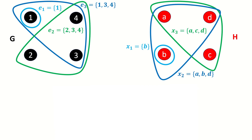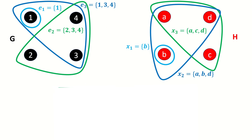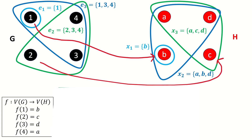Next, let's work through an example. Let's show, using our definition of isomorphism, that these hypergraphs are isomorphic. To do this, we need to find a mapping between the vertices of G and the vertices of H that preserves edges in both directions. Let's try the function F, which maps 1 to B, 2 to C, 3 to D, and 4 to A. This is a bijective function, so all that's left to verify is that it preserves edges in both directions.